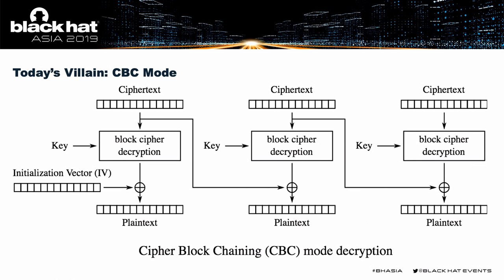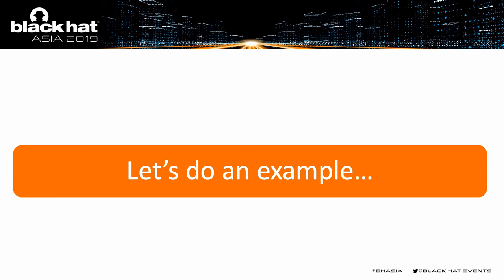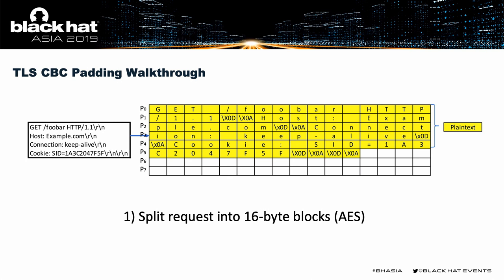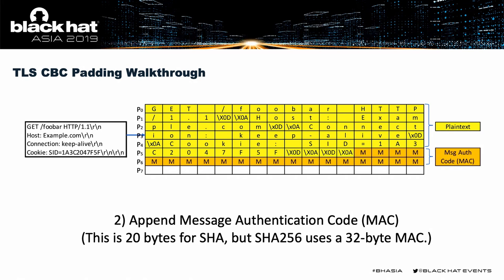Let's say we've got an HTTPS request — a basic GET request. We're going to use AES encryption, meaning 16-byte blocks. I've set aside a matrix of eight blocks as a prediction of how much data we'll need. We fill in the request bytes, then calculate a hash — a message authentication code, 20 bytes in this case for AES with SHA. We now have an even number of blocks, so you might think we don't need padding. But the answer is definitively yes, because without it you'll have ambiguity when you decrypt — you won't know where the MAC ends or where padding begins.